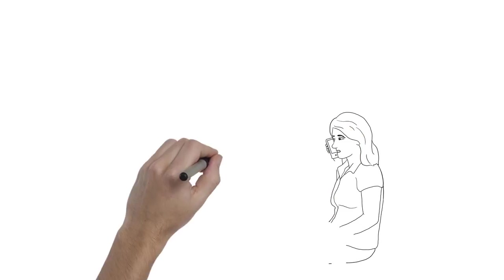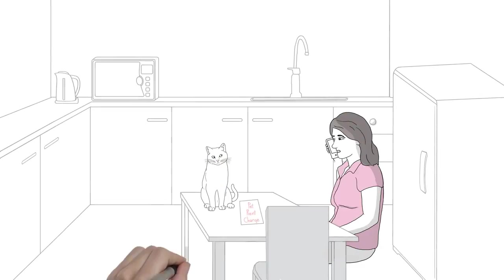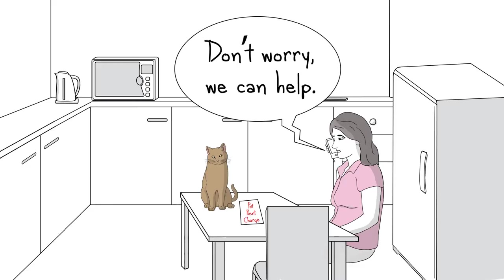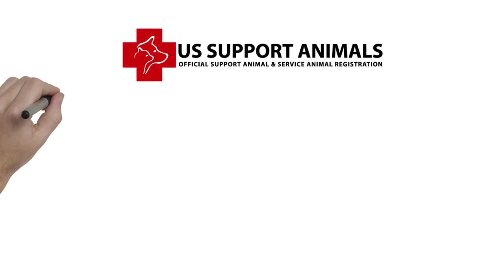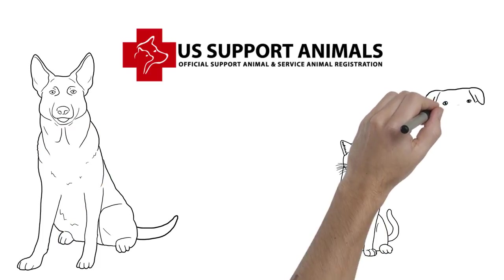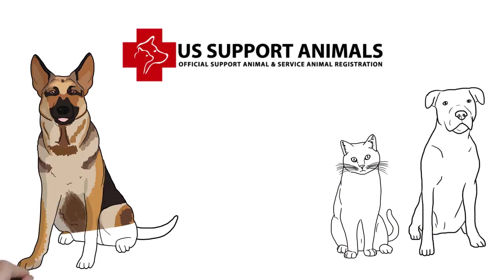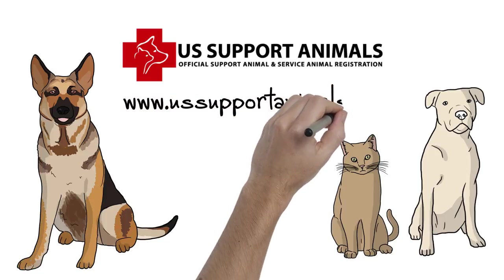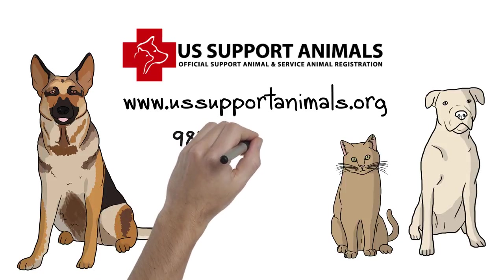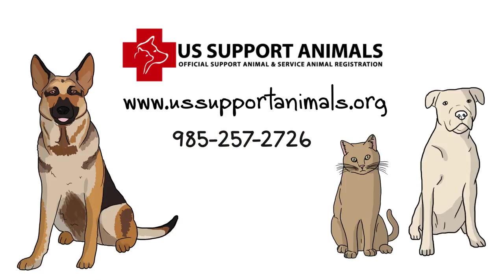If the rights of a registered user are ever violated, U.S. Support Animals has a staff of attorneys who will get involved and help. If you have a service or support animal and want to join the largest registry in the U.S., or just want more information, visit ussupportanimals.org and get started today. Or call us now for more information at 985-257-2726.